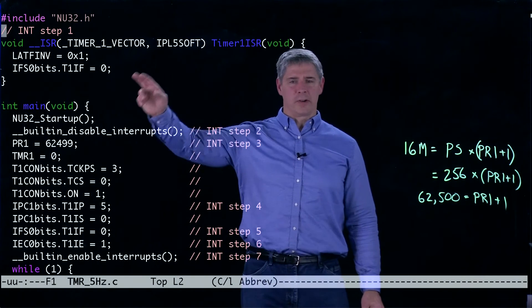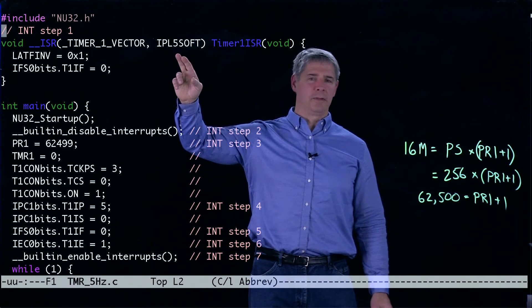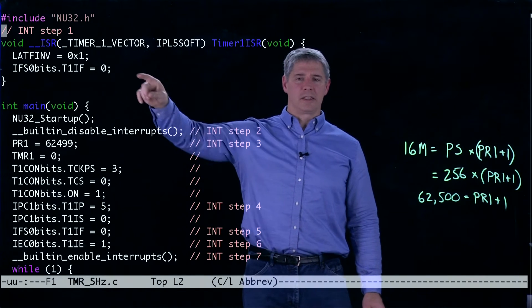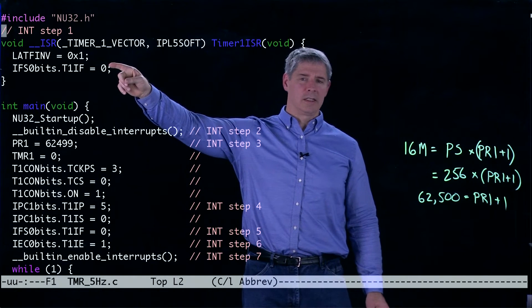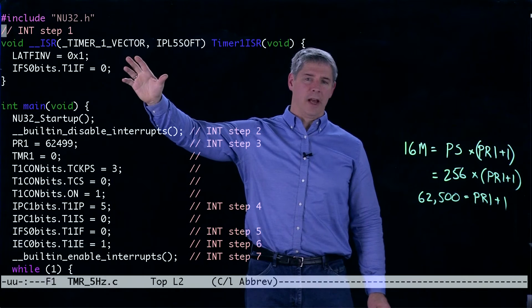We write this interrupt service routine. We give it a priority level of 5. All that this does is toggle one of the LEDs and then clear the interrupt flag.